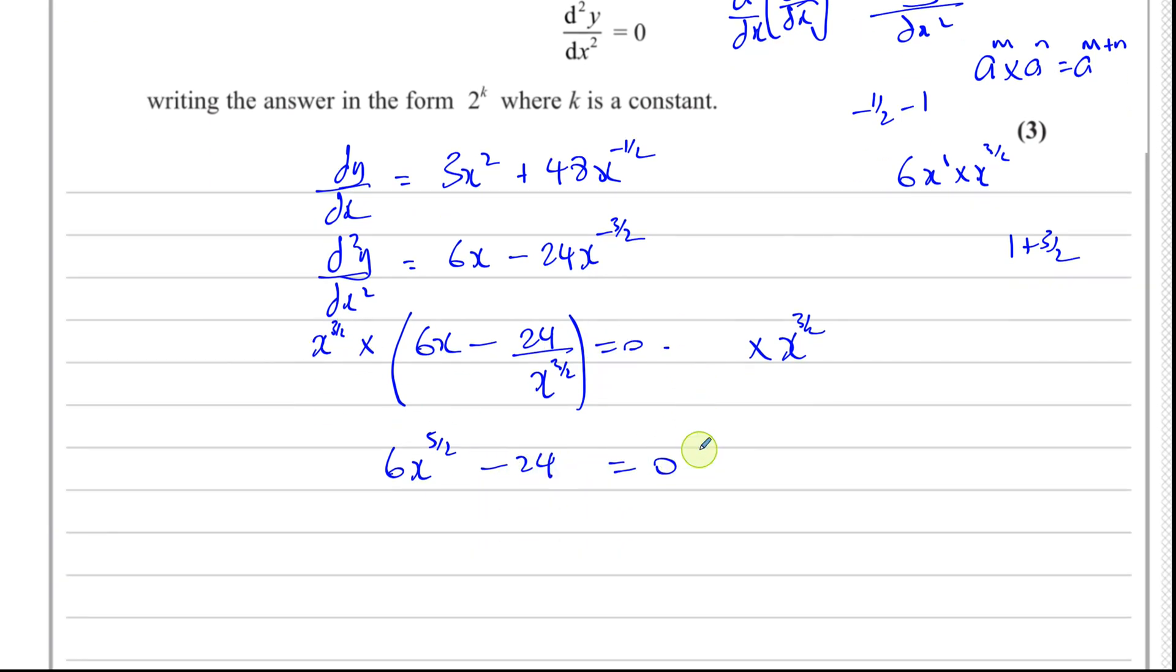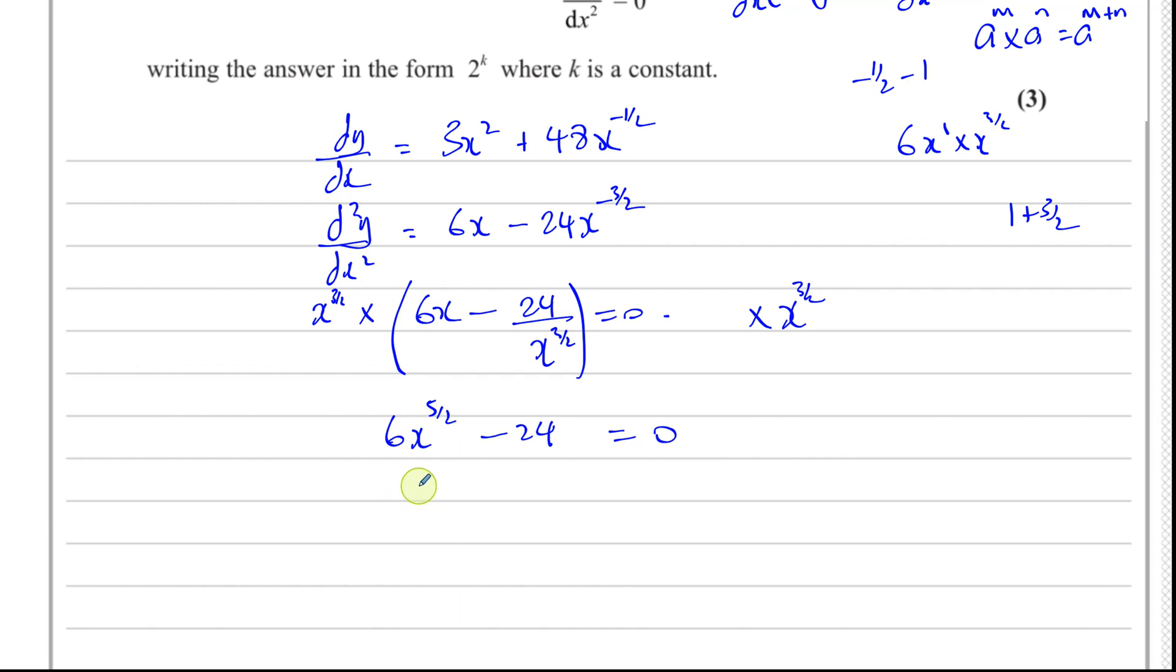So now we have to solve this equation. I can divide both sides by six. So I have x to the power of five over two minus four equals zero. So x to the power of five over two is equal to four. Now I want to find what x is.